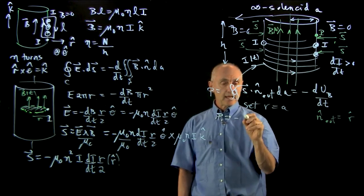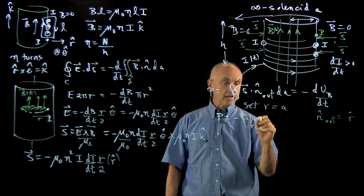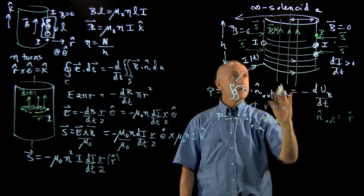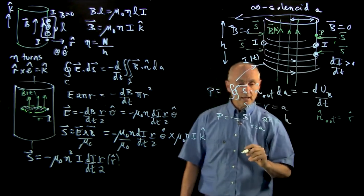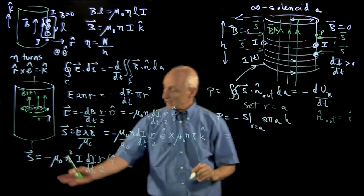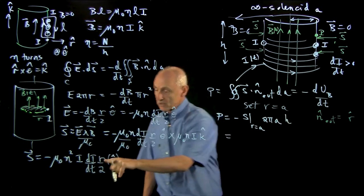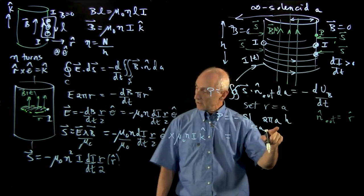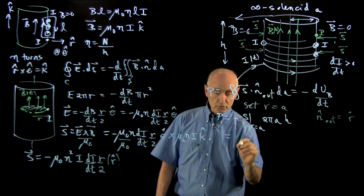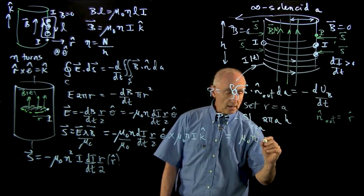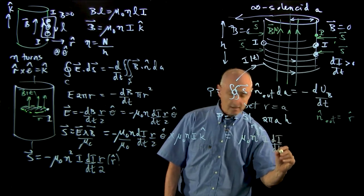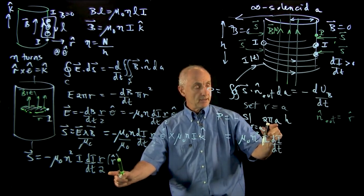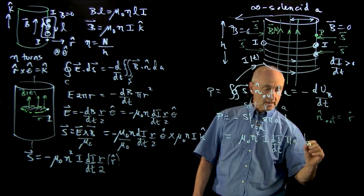We get a minus S evaluated at r equals a times the surface area of this cylinder, 2 pi a times its height h. So what we get when we substitute that in is, remember, we're going to set r equal to a. The twos are going to cancel. This will be pi a squared, and I'll have mu_0 n squared i di/dt. I have an a over 2, a 2 pi a, so that's pi a squared times h.